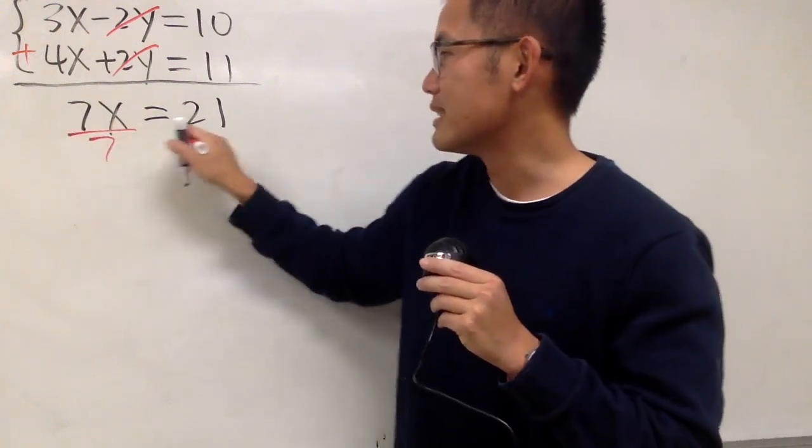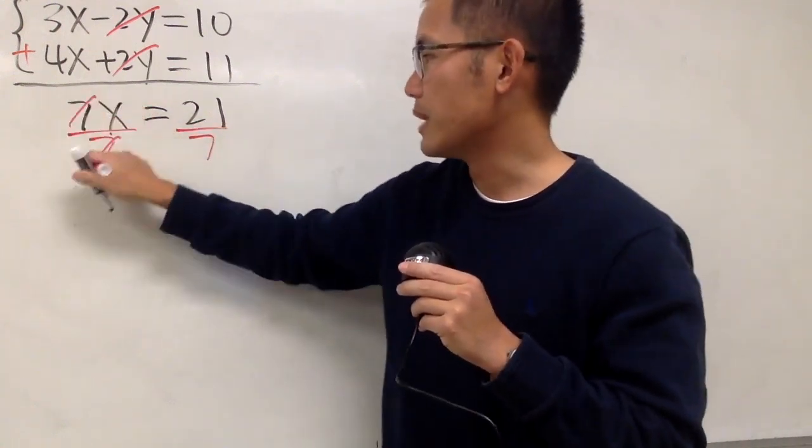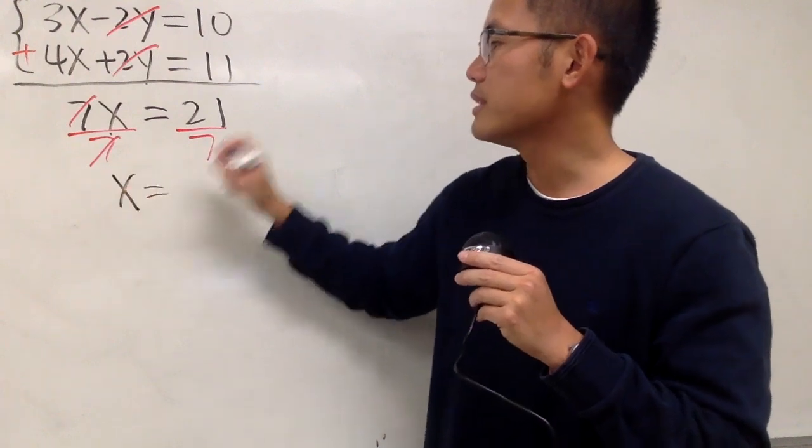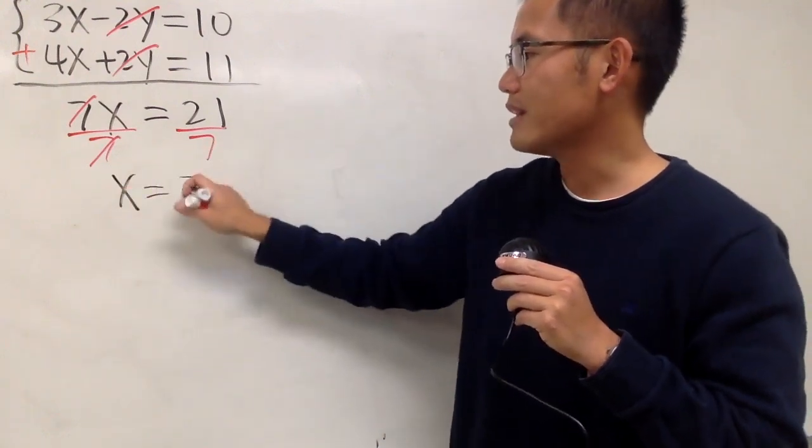And of course, we can just divide both sides by 7, so that this and that will be cancelled, and then we get x equals 21 divided by 7, that will be 3.